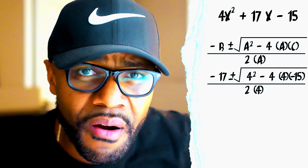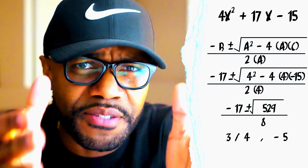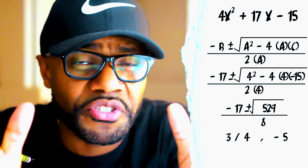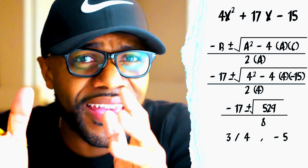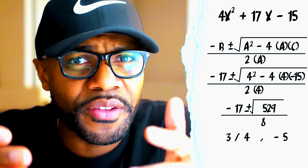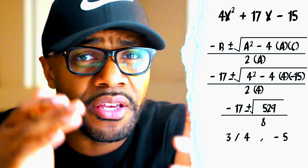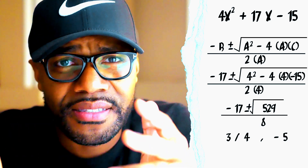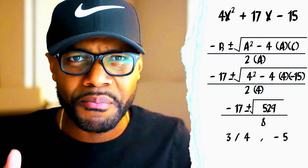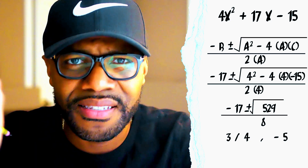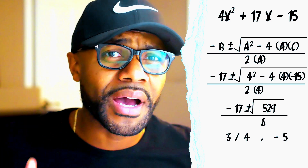The answers using the quadratic formula are 3/4 and 5. So you can see that with this method, if the value of A does not go neatly into the values of B and C, this method gets really ugly really fast. I'm not quite sure if it's the cure-all or the miraculous easier way that the media is making it out to be.